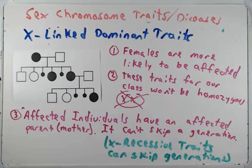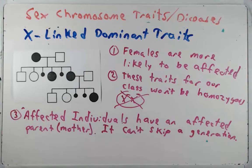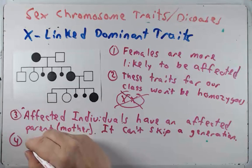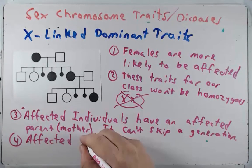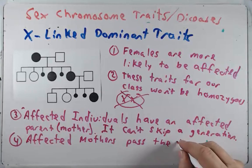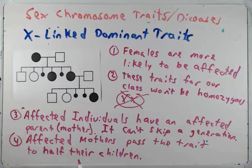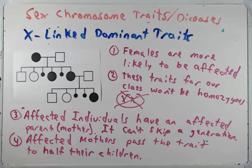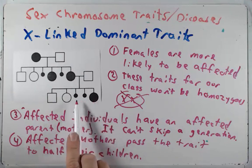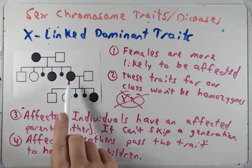Affected mothers pass the trait to half their children. Even though it's not shown on this pedigree, it's still passed to half their sons — they just don't make it through embryonic development so we never see them. With daughters, approximately half of them will have the trait. Looking at a Punnett square: for an X-linked dominant trait, the mother will always be heterozygous for our purposes, so one daughter has the trait and one doesn't, and one son has the trait but won't survive.